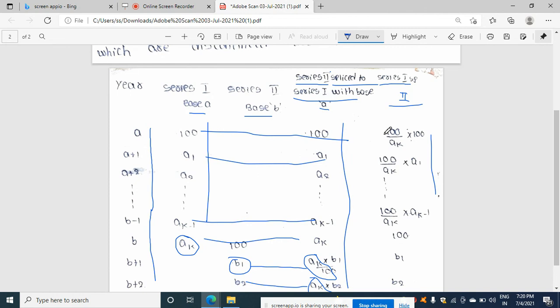If you are doing backward splicing, students, it will be 100 divided by A_K. Here it is 100 divided by A_K. There it was A_K by 100, right? And that particular A1, series one. Again, 100 divided by A_K into series one. This line you are doing. Again, it will be 100 divided by A_K into A2, and so on it will go on. Till this line, 100 divided by A_K into A_K minus one.